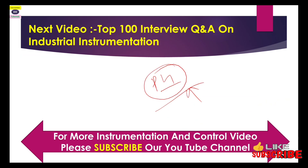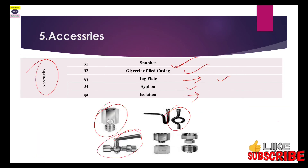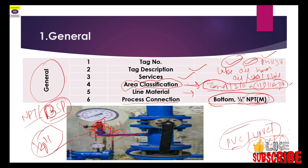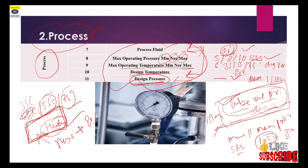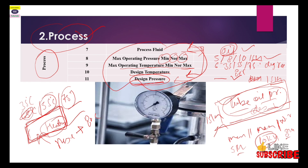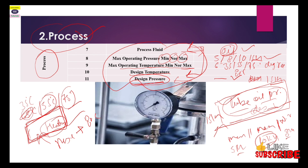This whole topic of pressure gauge data sheet has been covered here. The data sheet will be available on our email ID given in the description, and we will provide it in Excel format so you can use it to purchase pressure gauges for your company or industry. If you are new to our channel, we cover almost all topics related to industrial instrumentation. Write your topic suggestions in the comment section and we will try to make a video on it. Thank you for watching.